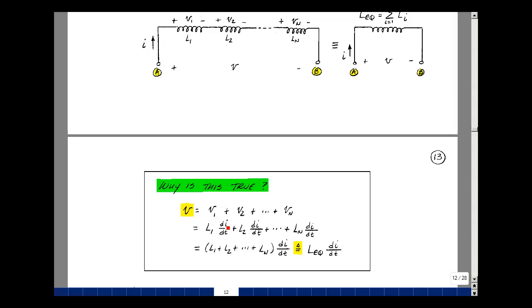So that can be L1 di dt, but the current in L1 is the same as L2 and so on. So that's the same derivative, but then times the individual inductance. Pull that out as a summation of terms times the derivative with respect to t.